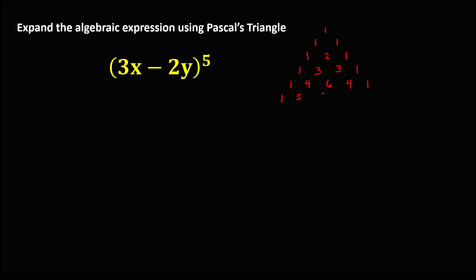Then starts with 1: 1 plus 4 is 5, 4 plus 6 is 10, 6 plus 4 is 10, 4 plus 1 is 5, then ends with 1. Then we have 1, 6, 15, 20, 15, 6, and 1. Then just continue the process. This is how to make a Pascal's triangle.